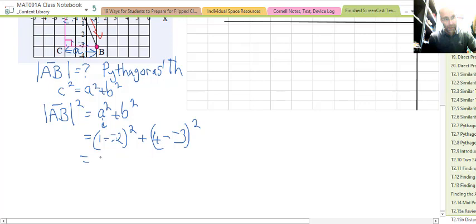So we have 1 + 2 is 3², and we have 4 - (-3), minus a negative is the same as plusing a positive. 4 + 3 is 7, so it's 7². So we have 9 + 49.